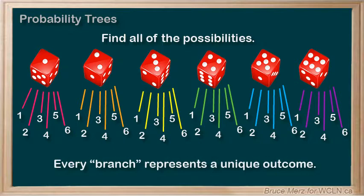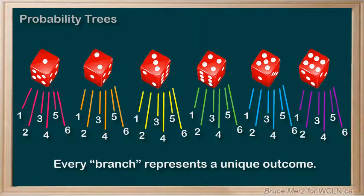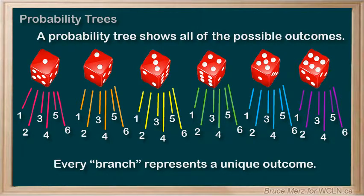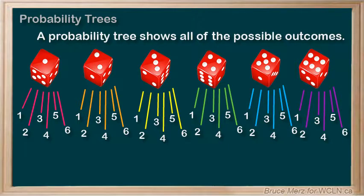Every unique branch there represents each of the unique possibilities. For example, take this branch here: this branch represents getting a five on the first roll and a three on the second roll. And this branch here represents getting a six on the first roll and a six again on the second roll. Anyway, as you can hopefully see, a probability tree shows all of the possible outcomes and is a great way to see what's going on.